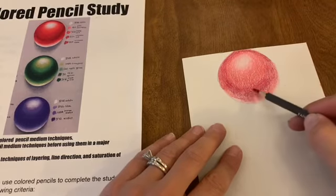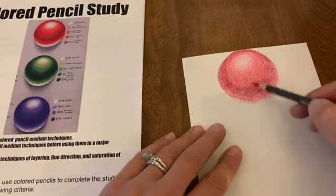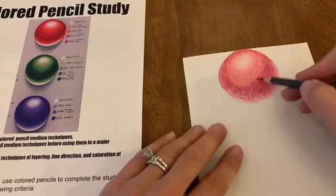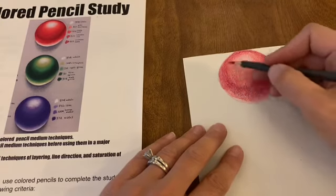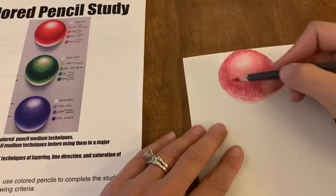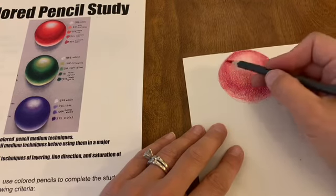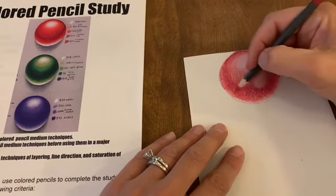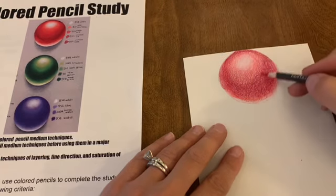Try to avoid pressing too hard too fast. You want to start off with very light layers, and then as you are getting into your darker layers and you maybe have about seven to ten layers on your circle, you can start pressing a little bit harder with your pencils to create that saturation.